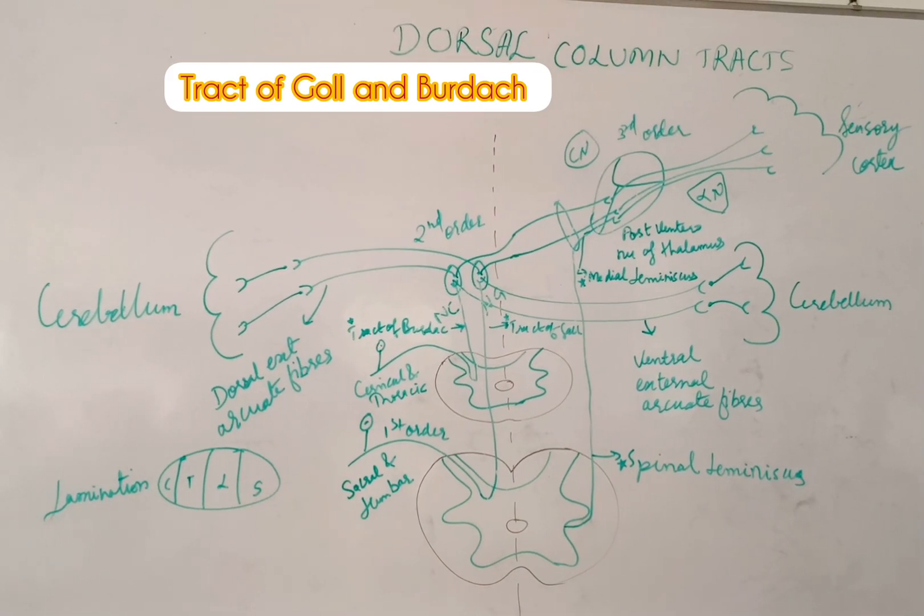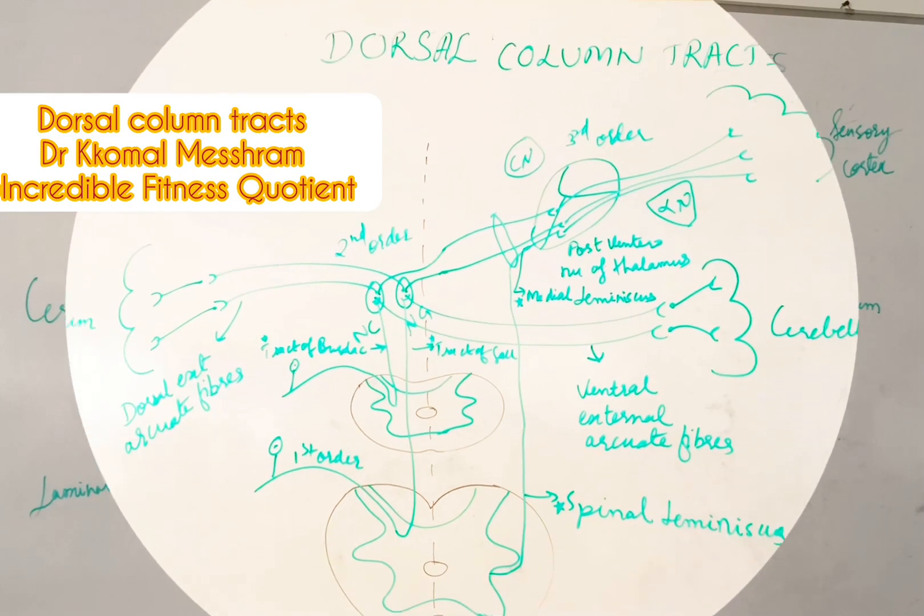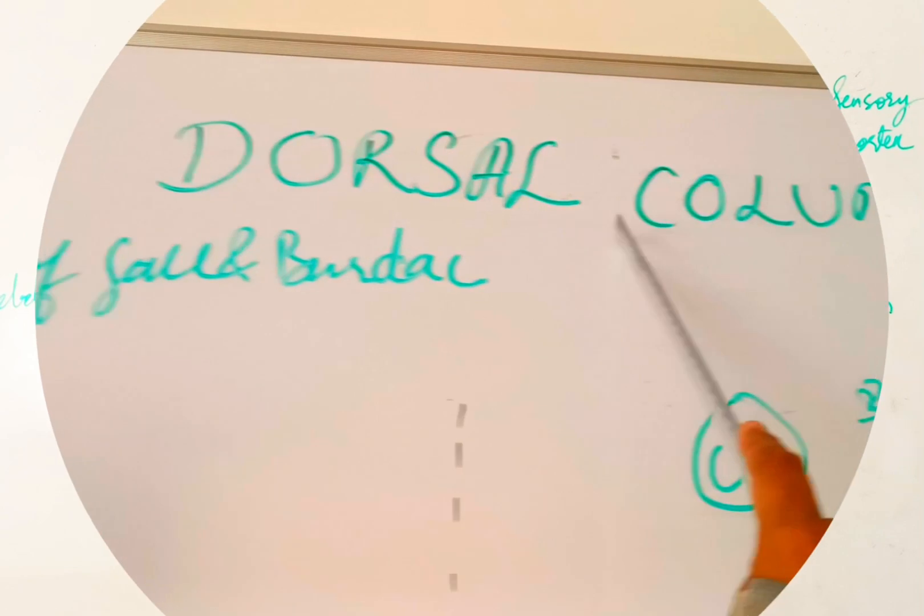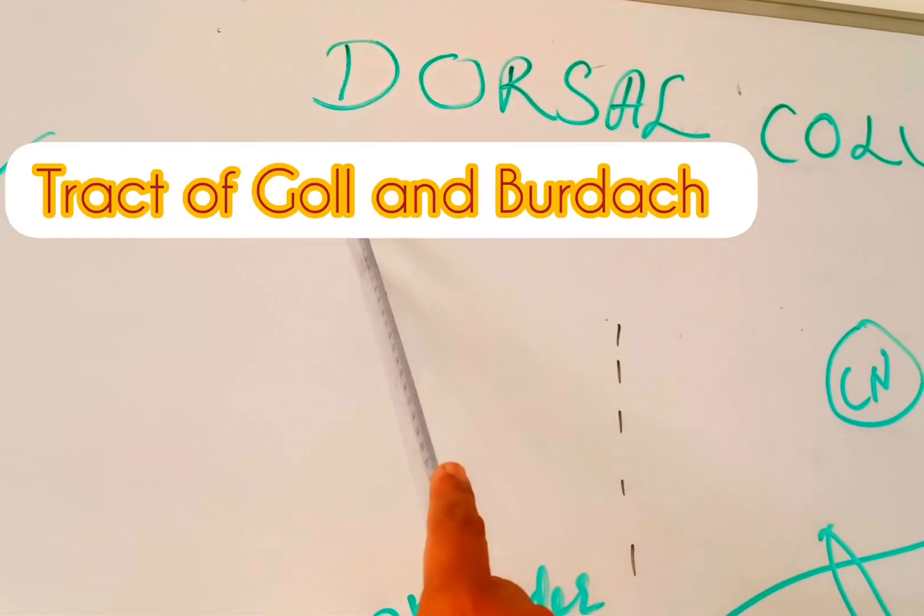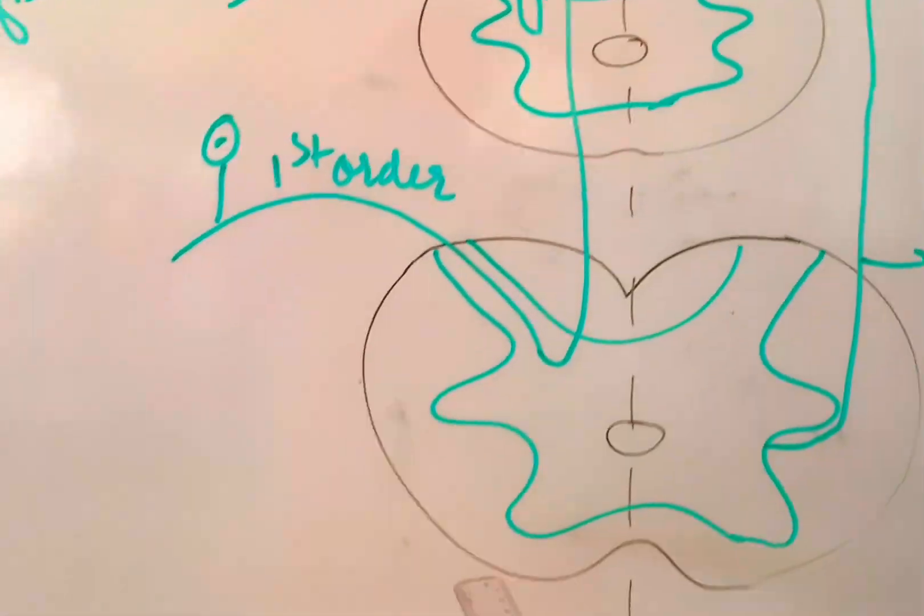We have already seen the spinothalamic tract. Now this is the diagram which depicts the dorsal column tract, which is also known as the posterior column tract. The other names are tract of Goll and Burdach. So let's begin.